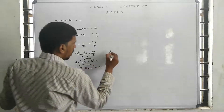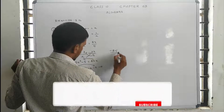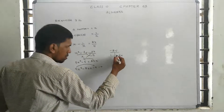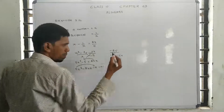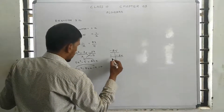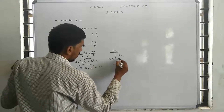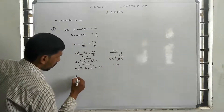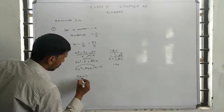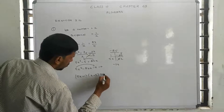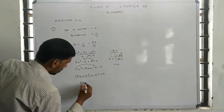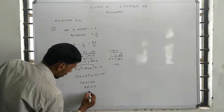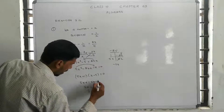Solving the quadratic: 5x equals 24, so x equals 24 by 5. And also, 5x equals minus 1, so x equals minus 1 by 5.